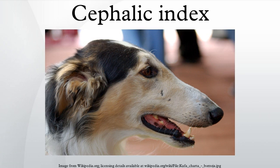List of mesaticephalic canines: Alaskan Malamute, American Cocker Spaniel, Australian Cattle Dog, Australian Shepherd, Basenji, Beagle, Bearded Collie, Beauceron, Belgian Malinois, Belgian Sheepdog, Bernese Mountain Dog, Bichon Frisé, Black and Tan Coonhound, Border Collie, Border Terrier, Brittany, Cairn Terrier, Canadian Eskimo.